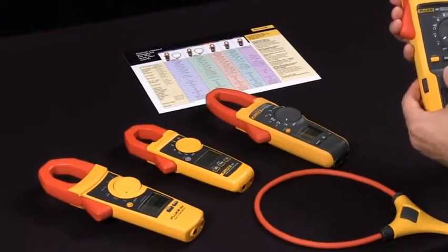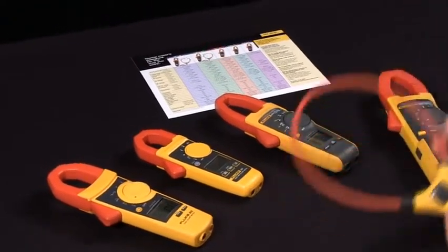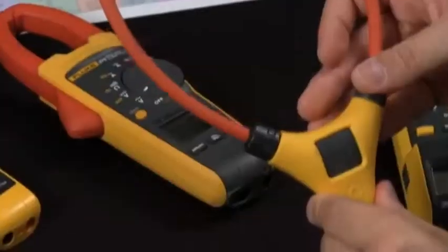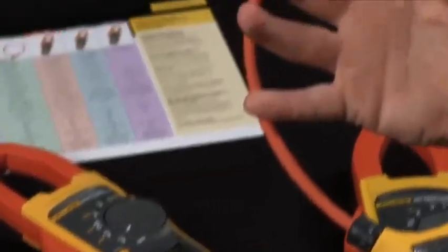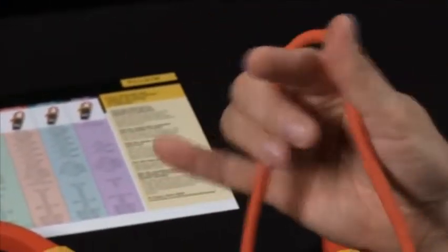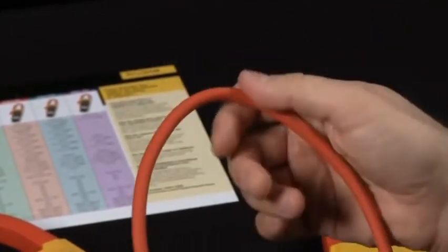If you also want to increase your capabilities, we have the IFLEX. The IFLEX allows you to go around multiple conductors of the same phase, or you can pick a single wire out of a conduit or an elbow. The IFLEX will work with any of our new generation clamp meters.